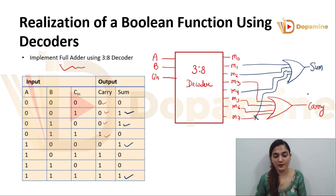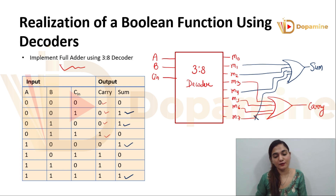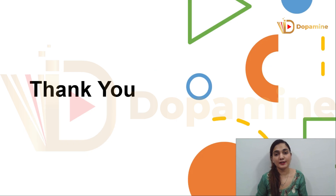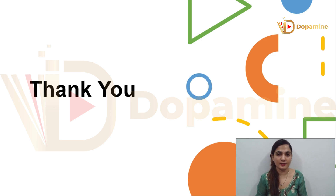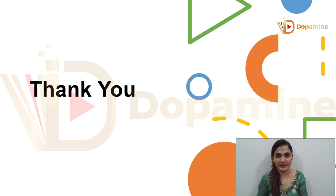This is how you get sum and carry for the full adder using the 3-to-8 decoder. With the help of a 3-to-8 decoder and 2 OR gates you get sum and carry. I hope you understood the realization of Boolean functions using decoders. If you have any doubts, put them in the comment section. Please like the video, subscribe to the channel, share it with your friends, and I'll see you in the next class where we will be winding up decoders. Thank you so much.